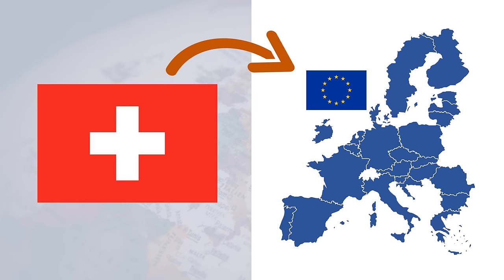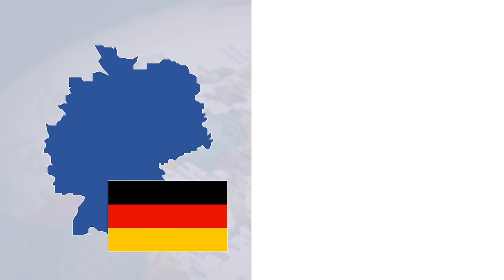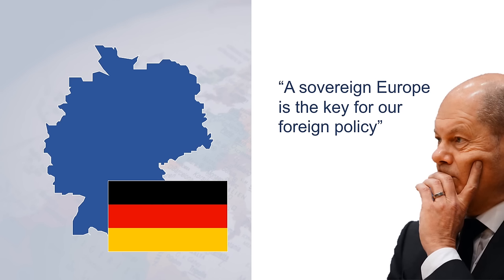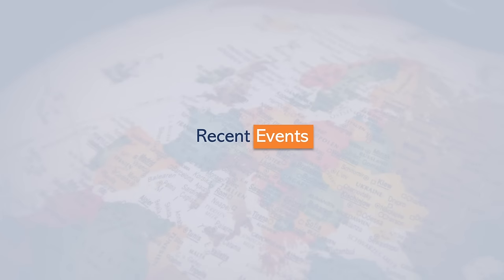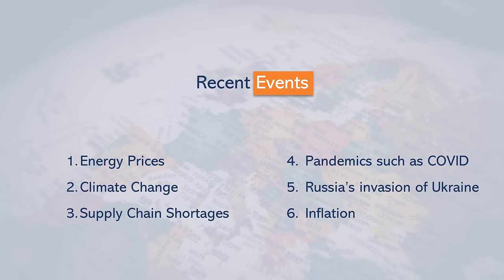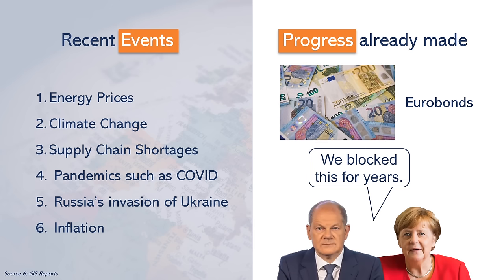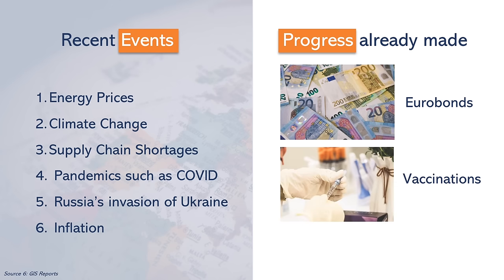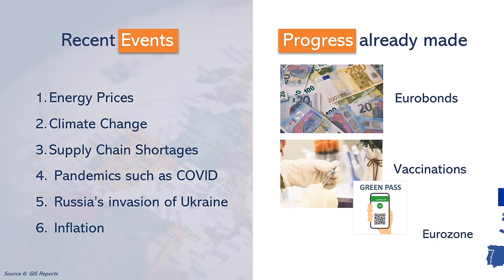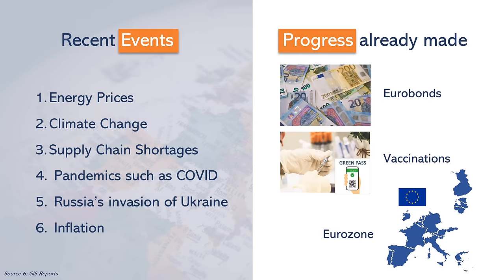The Swiss model might be the best federal model for the EU to adopt. There is also a lot of support in Germany for a federal Europe, with Chancellor Olaf Scholz stating that a sovereign Europe is the key for foreign policy. Recent events have shown that an integrated EU is necessary to deal with global issues. Progress towards a federation has already been made — for example, the introduction of euro bonds, which was a taboo subject only five years ago, as well as the EU procuring vaccines on behalf of all member states and creating a green pass. And of course there is the eurozone, which really is a federal monetary policy.